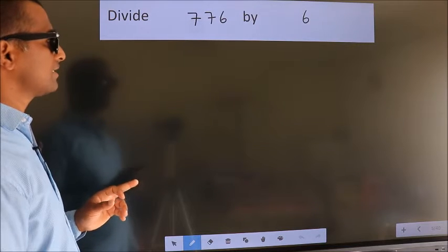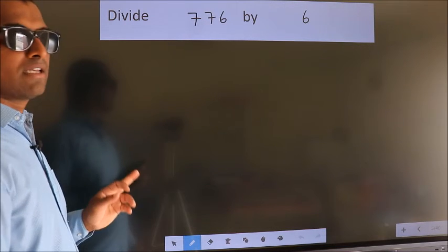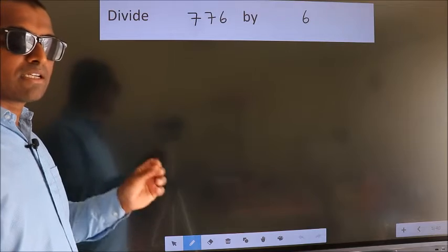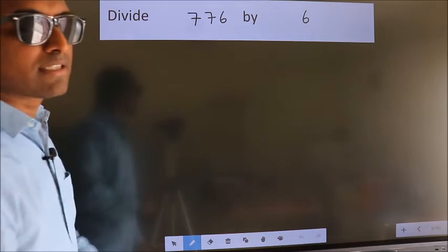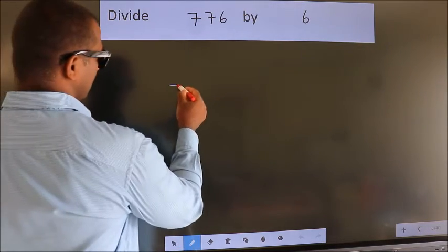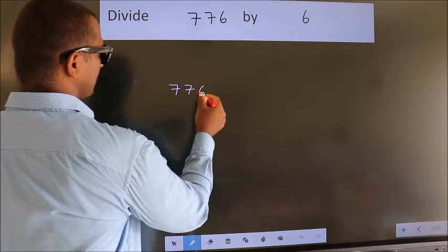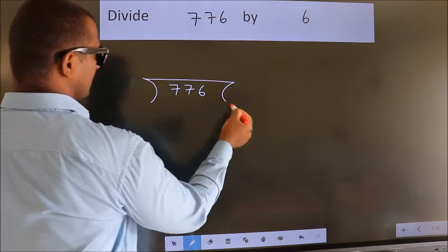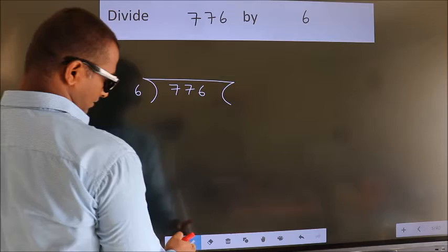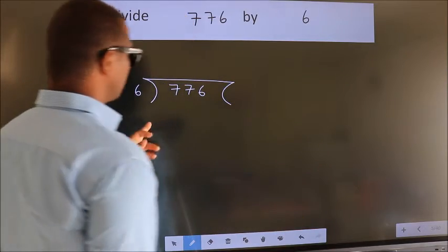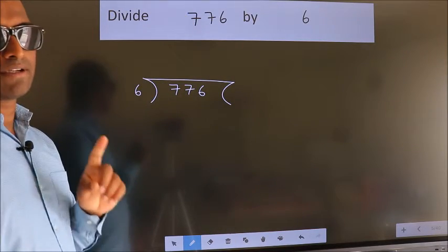Divide 776 by 6. To do this division, we should frame it in this way. 776 here, 6 here. This is your step 1.